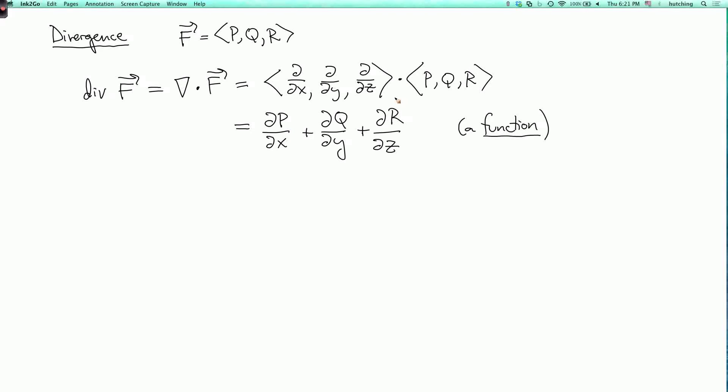Now to get some idea of what this means, let's look at a couple of examples. So first let's look at the divergence of the vector field x, y, z. Well this is dx/dx plus dy/dy plus dz/dz, which is three.